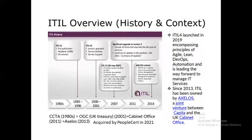Just to give some history: ITIL version 1 was published around 1996, which is over 20 years ago. Version 2 was launched in 2001 and continued to 2007, with around 34 volumes of books. Version 3 was launched in 2007, with an update in 2011 — so it is called ITIL version 3 2011. Currently, ITIL version 3 2011 has been deprecated and we are now on ITIL 4, launched in 2019.